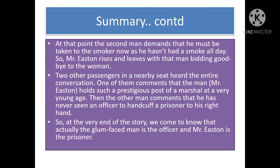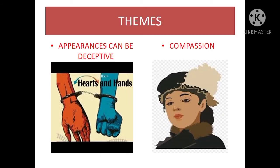The themes we get from this beautiful story are: appearances can be deceptive, and compassion. All that glitters is not gold — as you have learned in Merchant of Venice. Mr. Eastern was looking very handsome like a Marshal but in fact he was the criminal, and the glum, ugly-looking person was the real Marshal who was taking him to Leavenworth Prison.